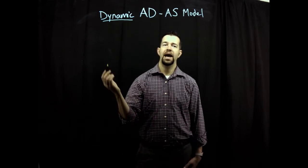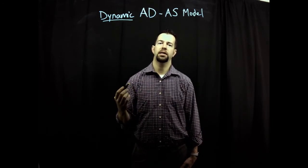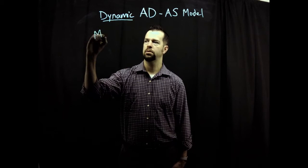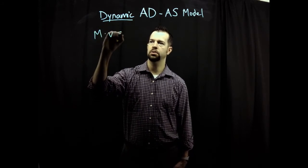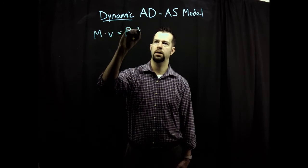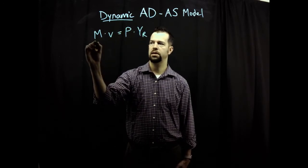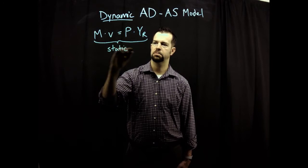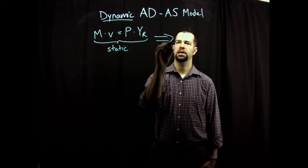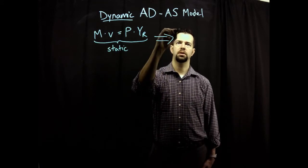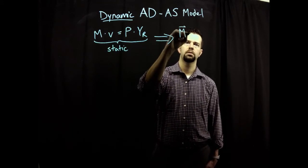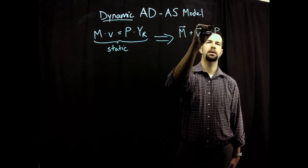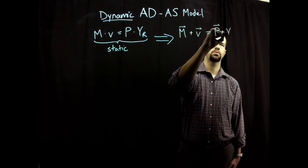To get from static to dynamic, we're going to start at the static version of the quantity theory of money equation: M times V equals P times YR. This version is static — it's expressed in levels — and we're going to go to the dynamic version, which is the growth rate of M plus the growth rate of V equals the growth rate of P plus the growth rate of Y.